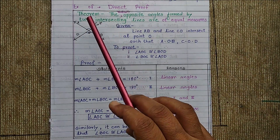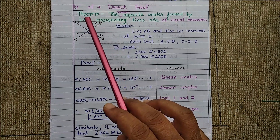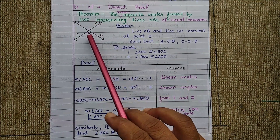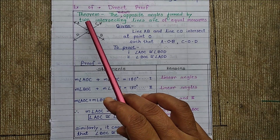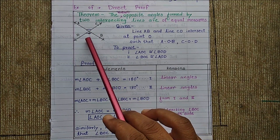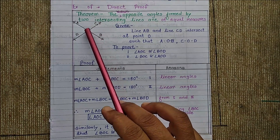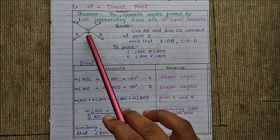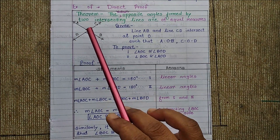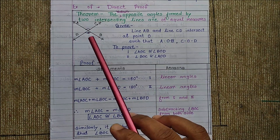These four angles form two pairs of vertically opposite angles. Angle AOC and angle BOD are vertically opposite angles to each other.